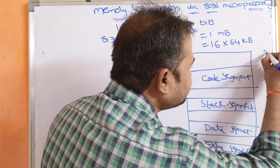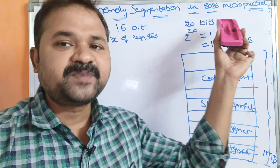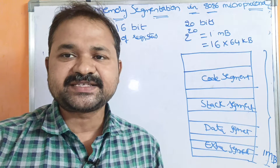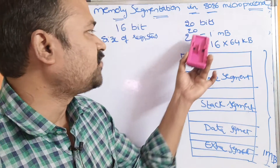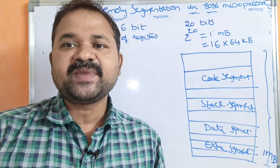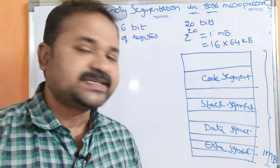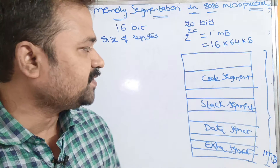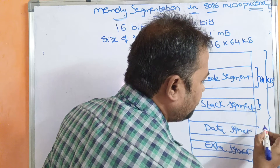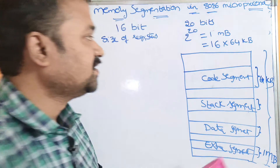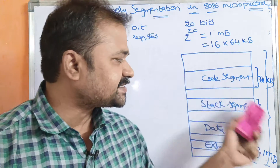The maximum size of the main memory is 1 megabyte, because the address bus uses 20 bits. 20 bits means we can place 2 to the power of 20 elements, which equals 1 megabyte. So 1 megabyte means 16 into 64 kilobytes. We can divide the main memory into a total of 16 segments, but here we have divided into only 4 segments. The size of each segment is 64 kilobytes. This is called memory segmentation — dividing the main memory into various segments.